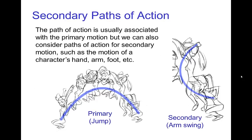We'll mostly be thinking about the primary motion and the primary path of action. So for a character jumping, that would be basically following the path of their body as it's moving. But there are other secondary motions that occur.